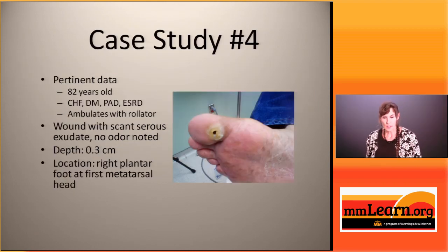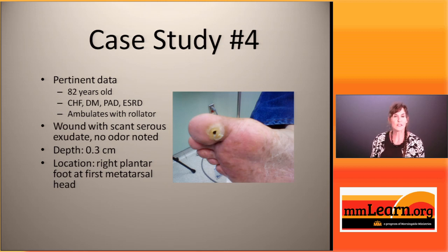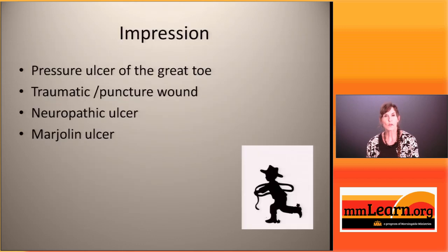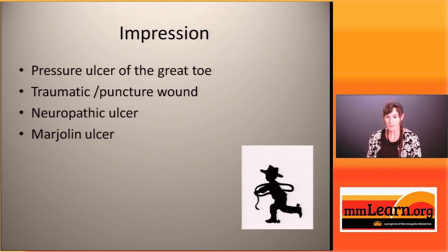Case study number four: an older gentleman with diabetes, peripheral arterial disease, and end-stage renal disease. He ambulates with a walker and is an assisted living resident. He has a wound with scant serous exudate, no odor, depth of about 0.3 centimeters, located on the right plantar foot at the first metatarsal head. On close-up, there is a large amount of hyperkeratotic tissue in the peri-wound area. Is this a pressure ulcer of the great toe, a traumatic or puncture wound — keep in mind diabetics often have poor sensation — a neuropathic ulcer, or a Marjolin's ulcer?